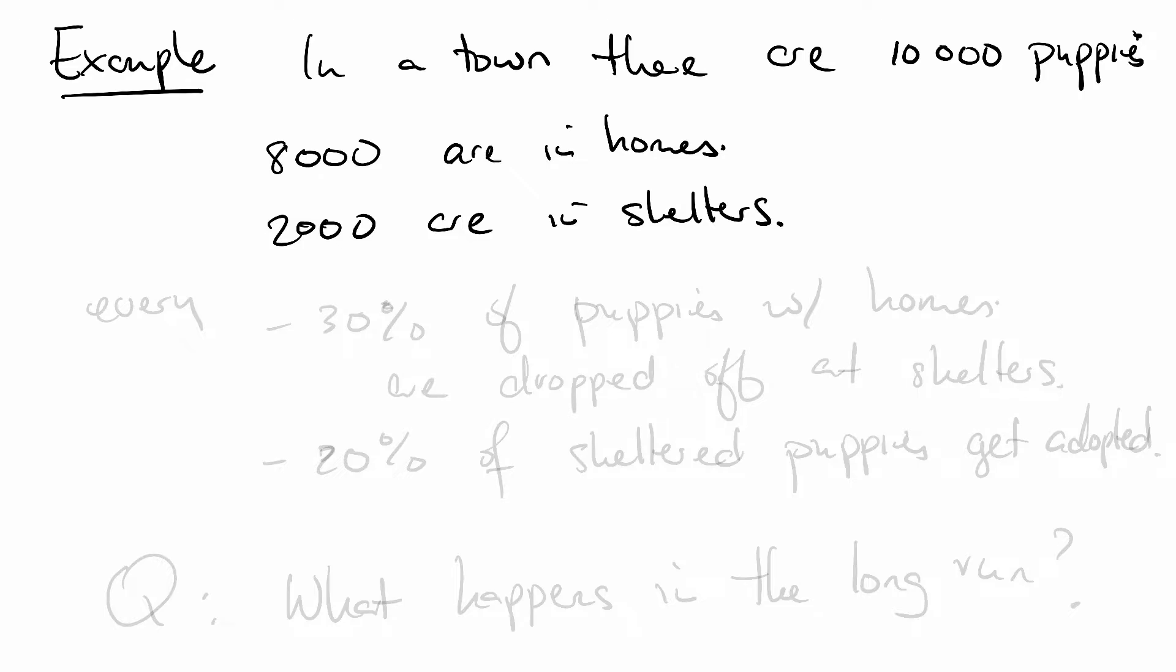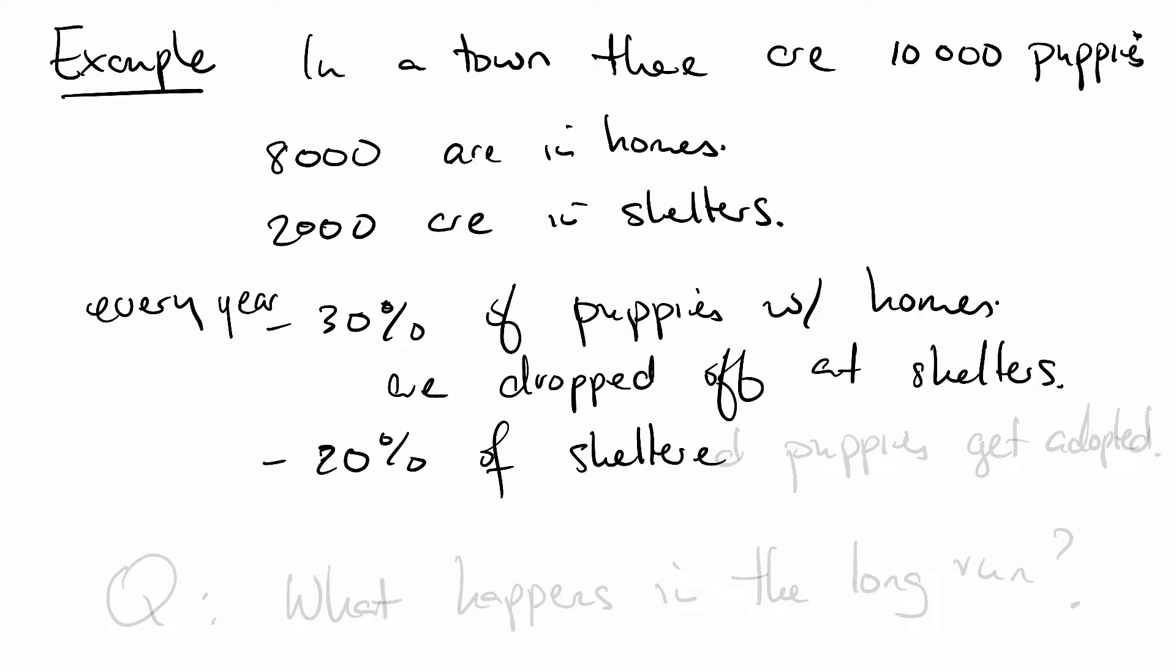We also know something about the patterns of adoption. So every year we know that 30% of the puppies with homes are dropped off at shelters. And we know that 20% of sheltered puppies get adopted. The question that you might have is what happens in the long run? With these patterns of adoption and dropping puppies off at shelters, what happens in the long run to all of these puppies?